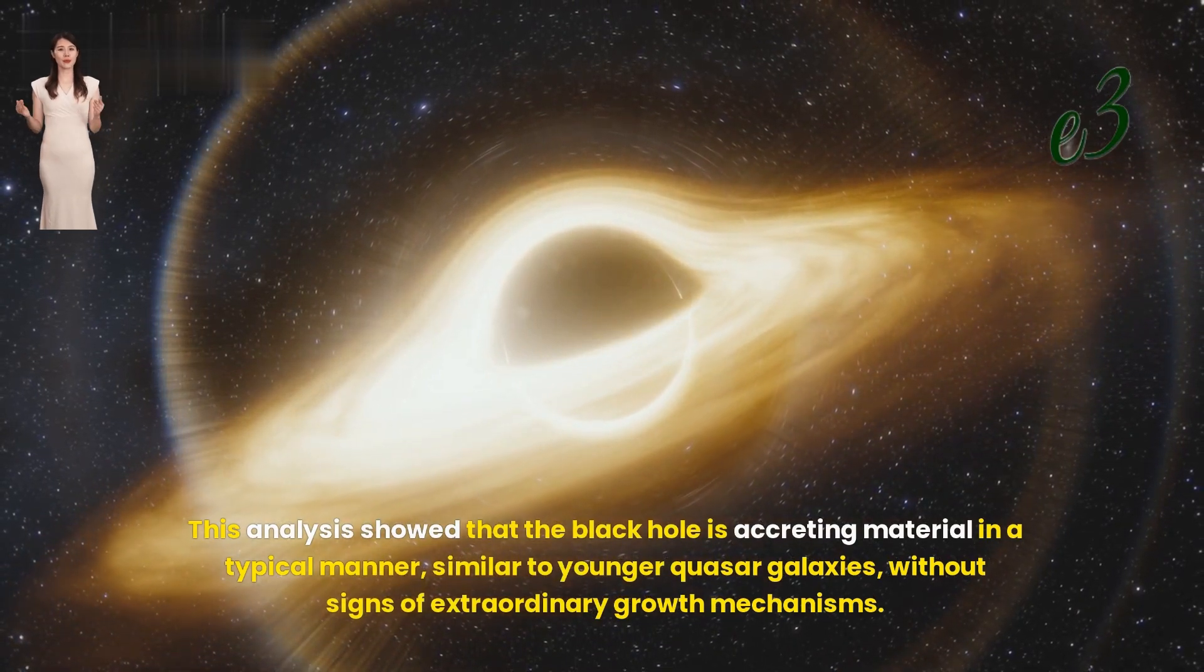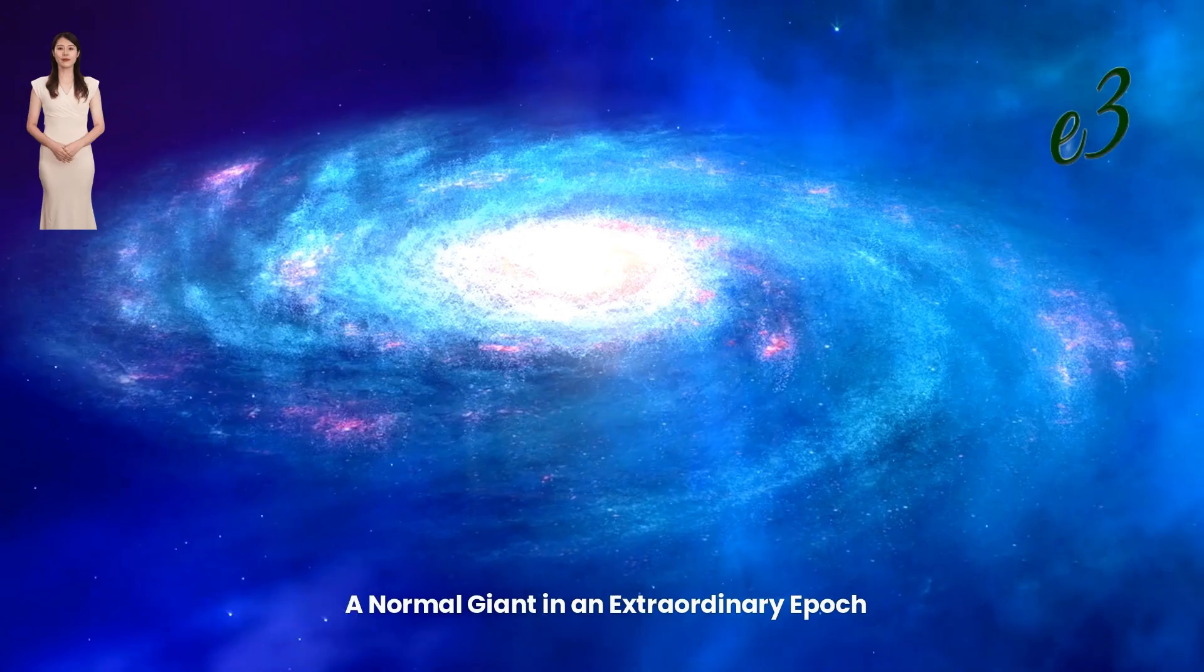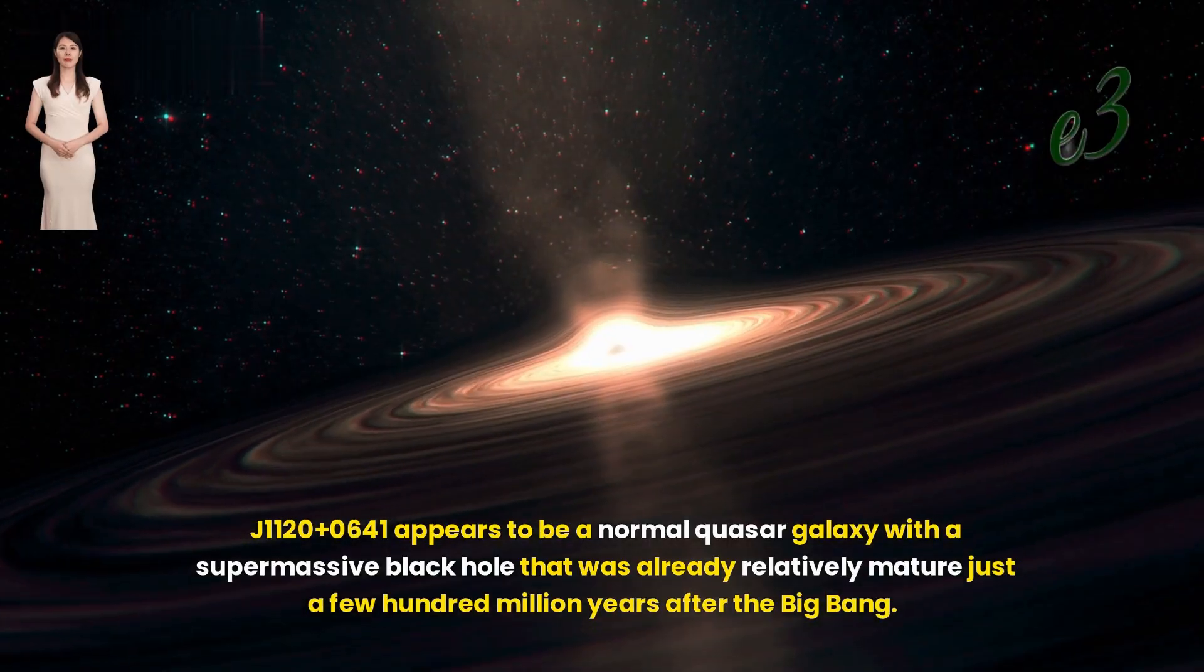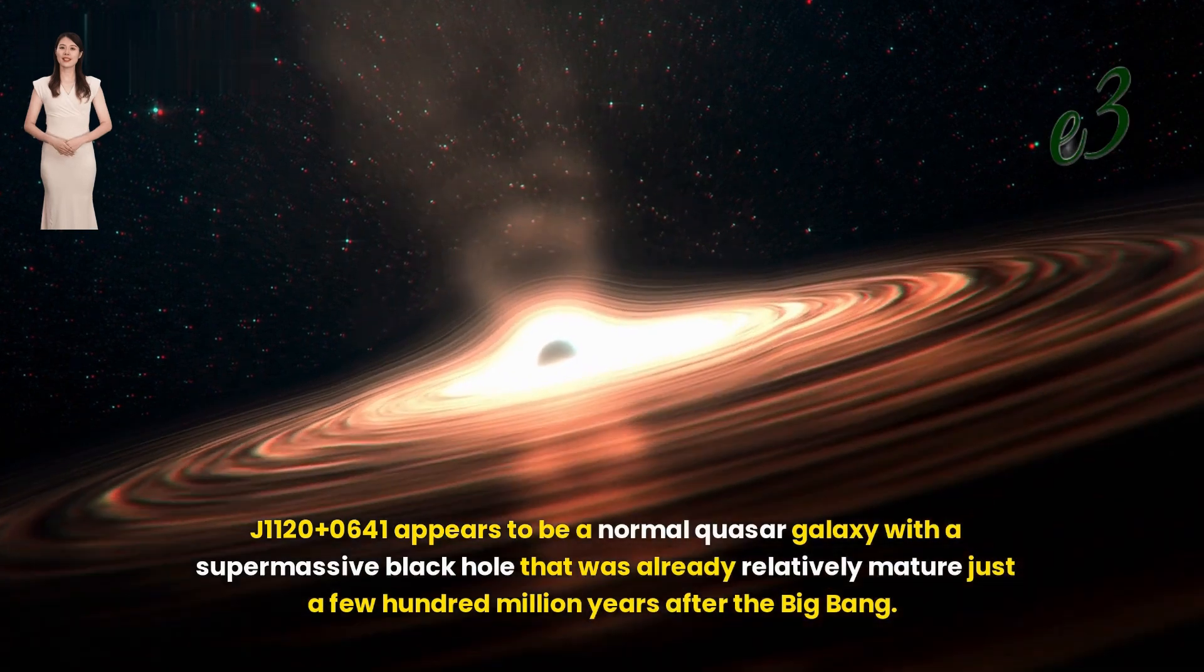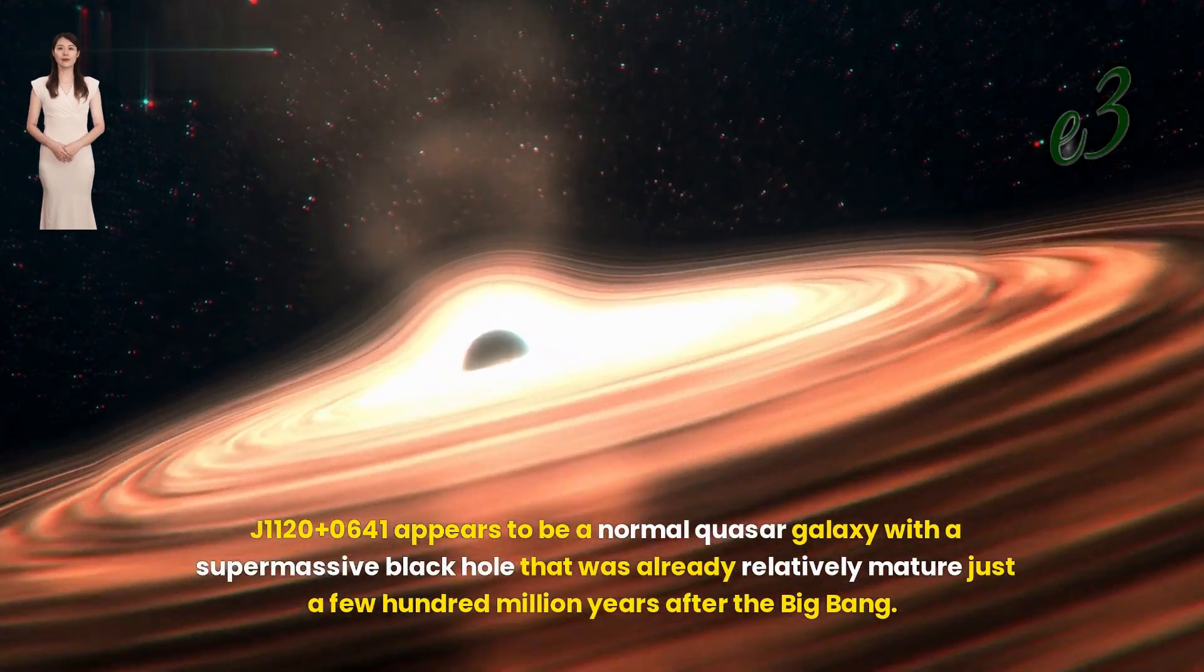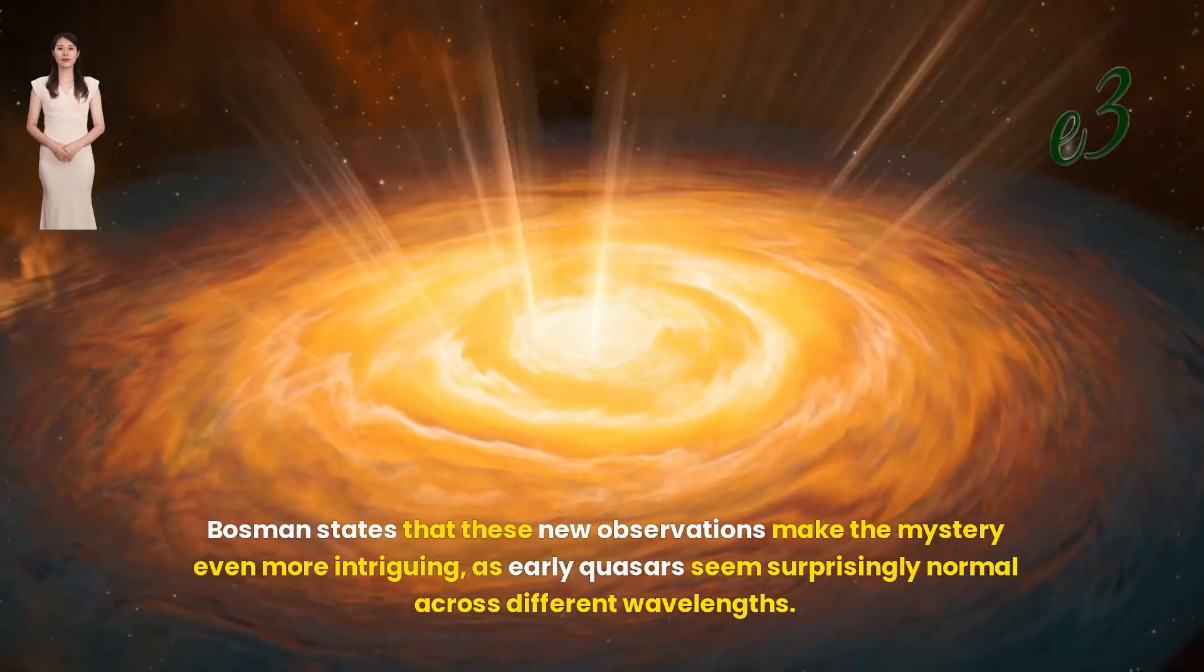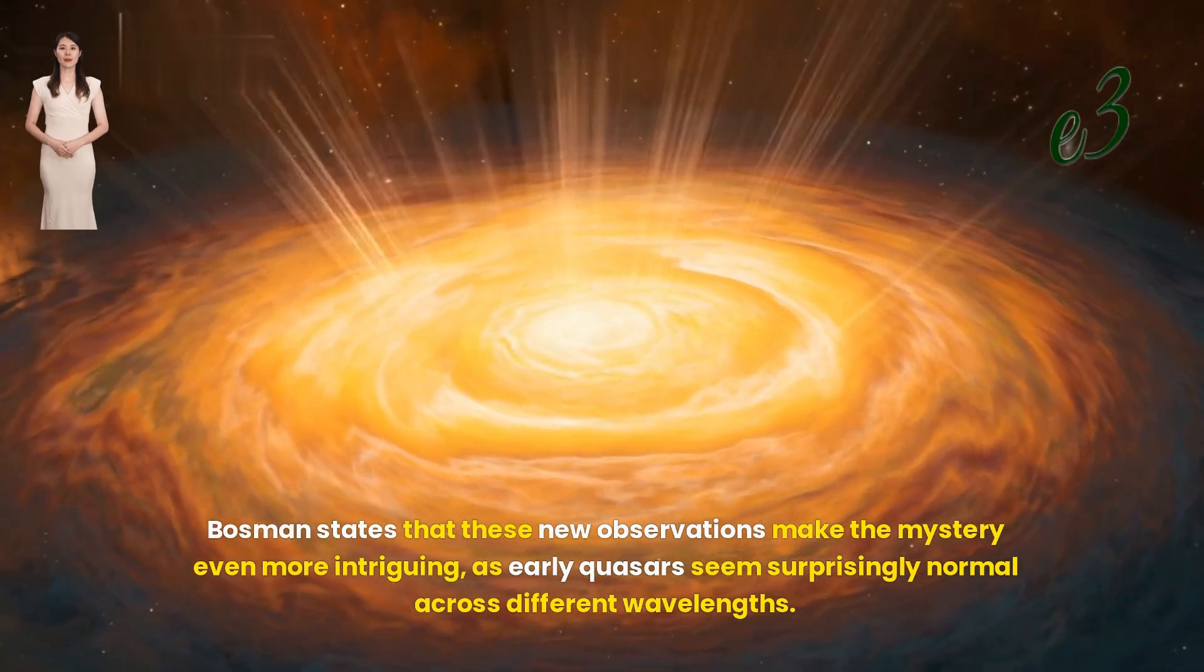A normal giant in an extraordinary epoch. J1120+0641 appears to be a normal quasar galaxy with a supermassive black hole that was already relatively matured just a few hundred million years after the Big Bang. Bosman states that these new observations make the mystery even more intriguing, as early quasars seem surprisingly normal across different wavelengths.